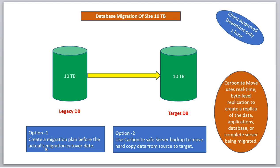You can write a PowerShell script that takes daily backups from the legacy server, copies them to the target server, and performs the restoration automatically. Alternatively, you can do this manually — move daily incremental backups from legacy to target and restore them, including log backups. During the cutover, you only need to apply the final log backups from that specific time frame.